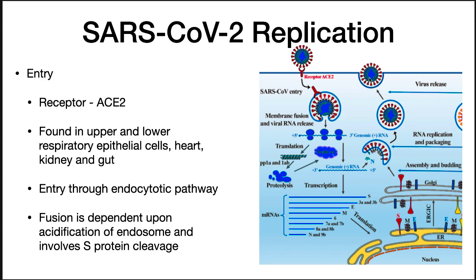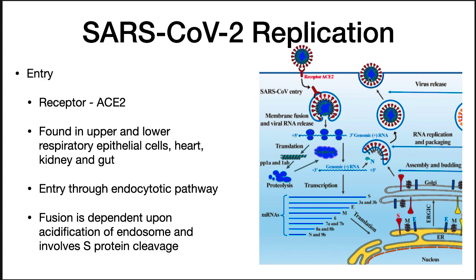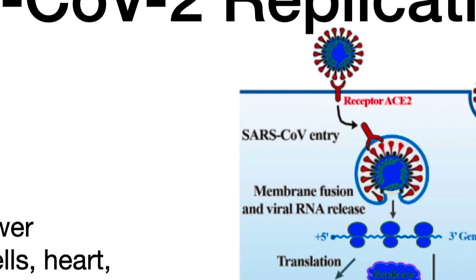SARS-CoV-2 enters cells by attaching to the ACE2 — the angiotensin converting enzyme 2 — receptor. These receptors are common on epithelial cells that line the lung, heart, kidney, brain, and gut, thus accounting for the targets of the virus.